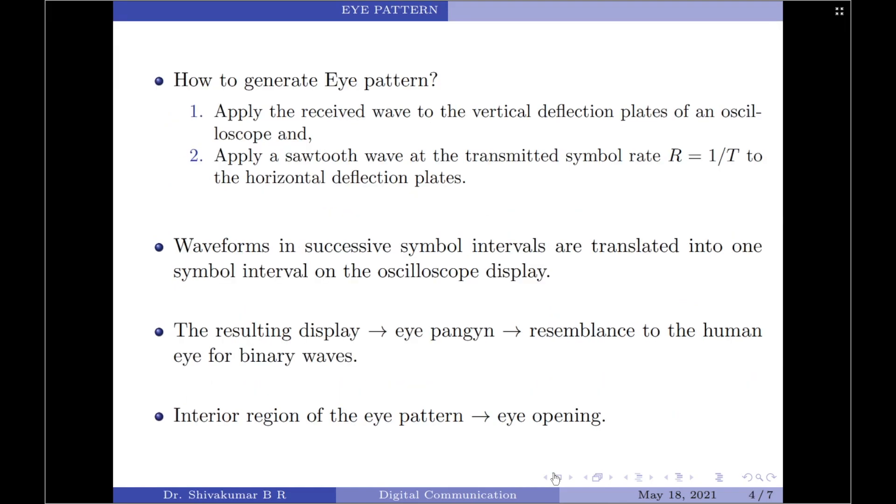Let us now move on to discuss how to generate an eye pattern. To generate an eye pattern, we have to apply the received wave to the vertical deflection plates of an oscilloscope and then apply a sawtooth wave at the transmitted symbol rate R equals 1 by T to the horizontal deflection plates.